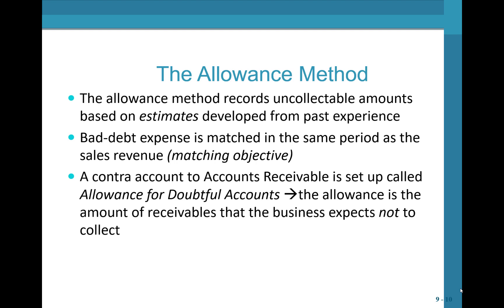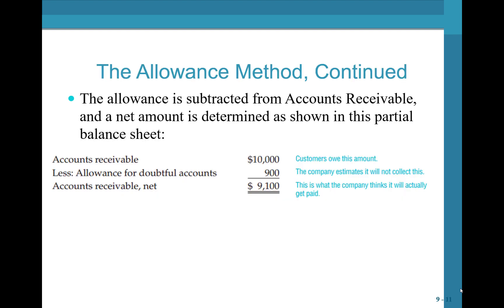One of the challenges when we sell on credit is that you don't know when or who is not going to pay you back — you just know that on average some customers may not pay. Because that's a cost of selling on credit, we need to record that expense in the period we make the sale, which requires an estimate of what we expect not to collect. The allowance is subtracted from AR and a net amount is determined.